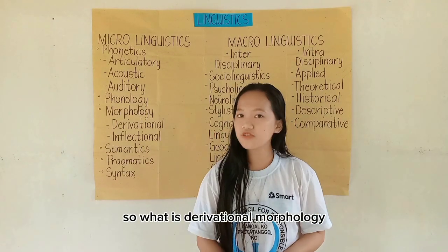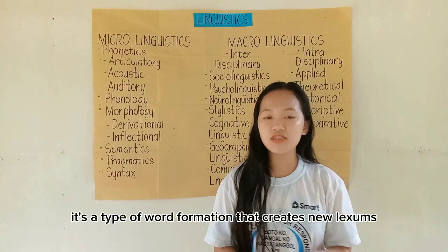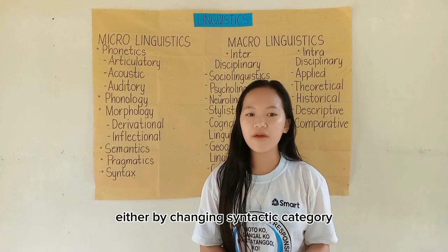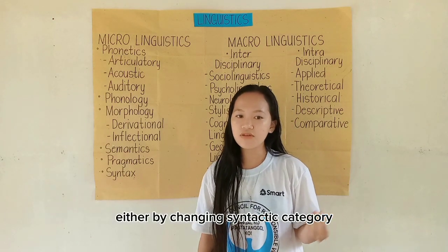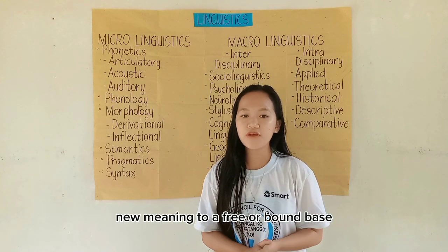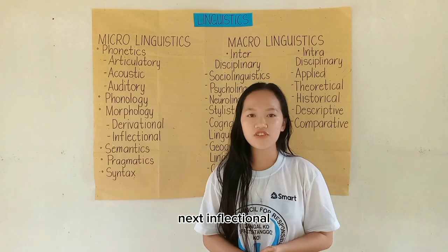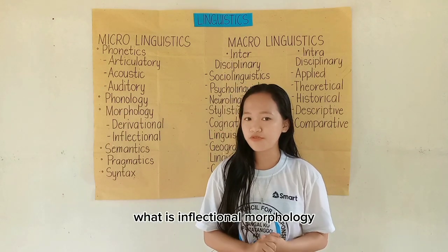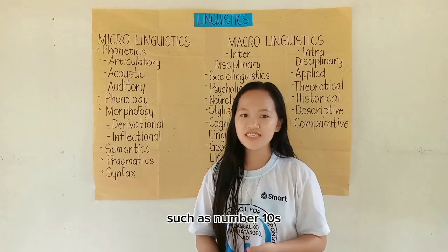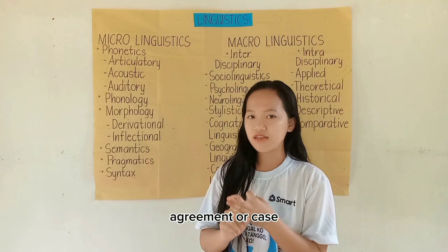Derivational morphology is a type of word formation that creates new lexemes either by changing the syntactic category or by adding substantial new meaning to a free or bound base. Inflectional morphology conveys grammatical information such as number, tense, agreement, or case.